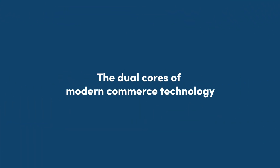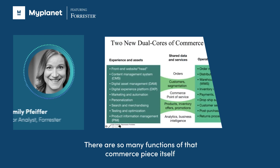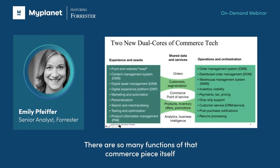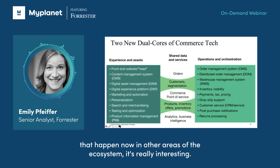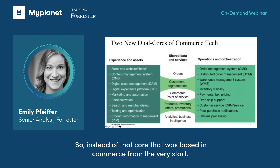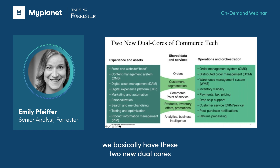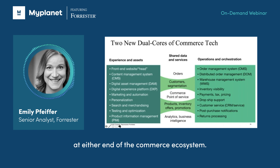There are so many functions of that commerce piece itself that happened now in other areas of the ecosystem. So instead of that core that was based in commerce from the very start, we basically have these two new dual cores at either end of the commerce ecosystem.